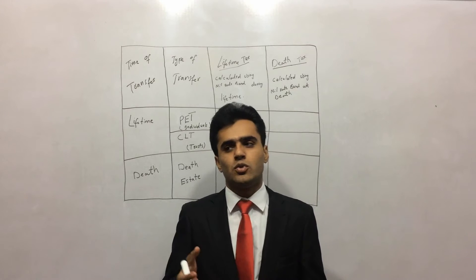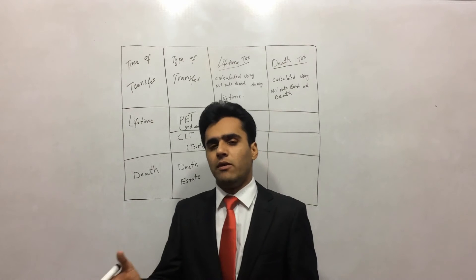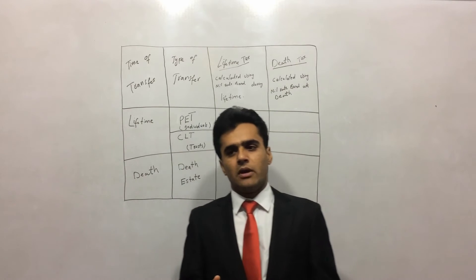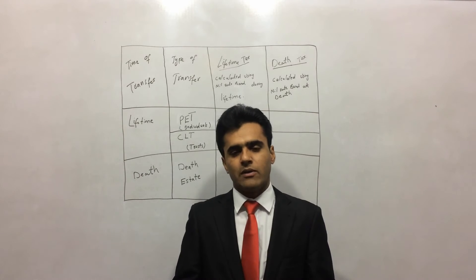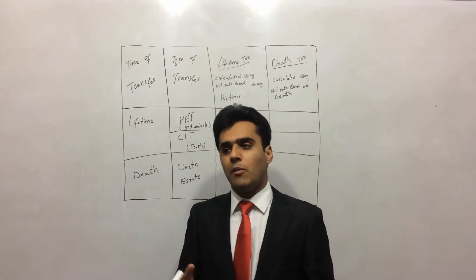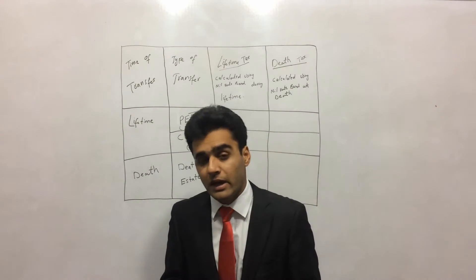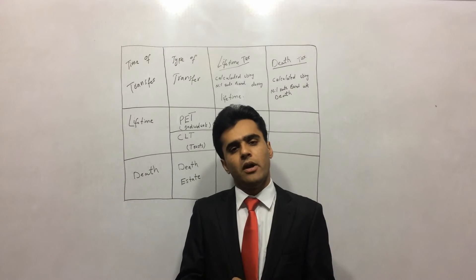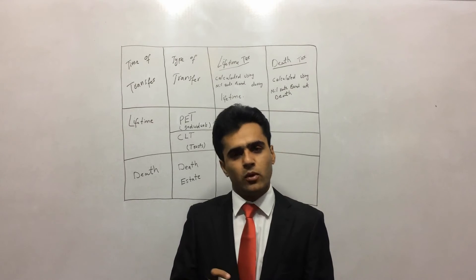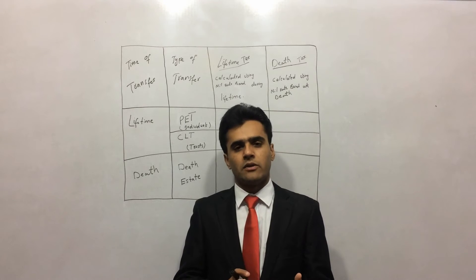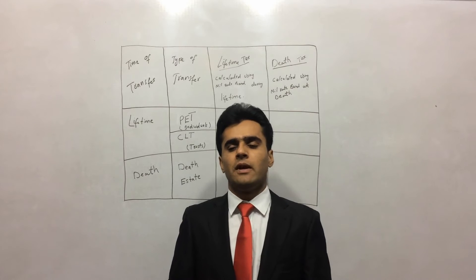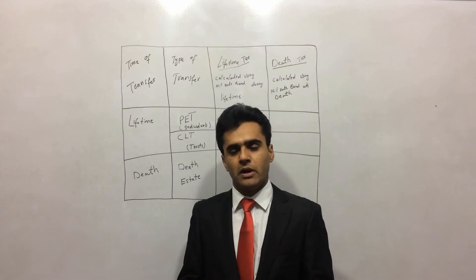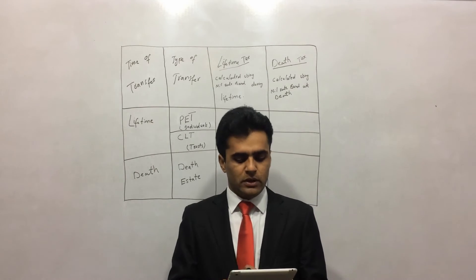We can make transfers to two types of taxable persons: one is individuals and the other is trusts. Now, regarding tax rates for inheritance tax — how much we will have to pay during lifetime and how much during death, and what exemptions are available — for that we will have to look at our notes. These notes are very precise and to the point, and inheritance tax is a very important area of both ACCA F6 and P6, as the examiner always examines questions from this area.